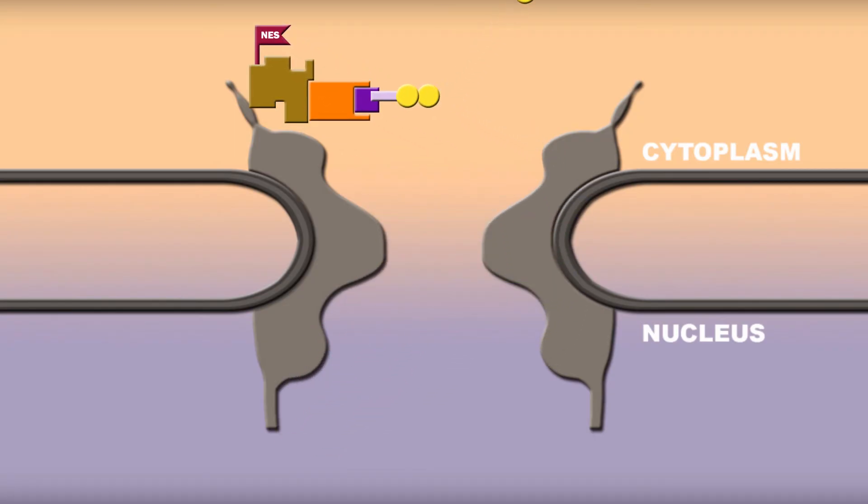RAN-GAP helps with hydrolysis of RAN-GTP to RAN-GDP, and RAN-binding protein helps detach RAN from the receptor. The cargo dissociates and the nuclear export receptor is free. Now, the receptor returns to the nucleus without any enzymes helping it.